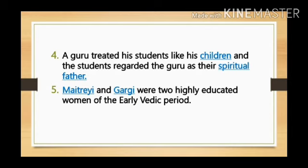Question number 5: Dash and Dash were two highly educated women of the early Vedic period. Your answer is Maitreyi and Gargi were two highly educated women of the early Vedic period. However, in the later Vedic period, women were not allowed to study Vedic literature.